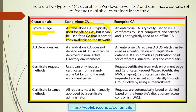Enterprise certificate authority is typically used to issue certificates to users, computers, and services. It is not typically used as an offline certificate authority — it is a kind of online certificate authority. I will show you how to install both standalone and enterprise in coming videos.